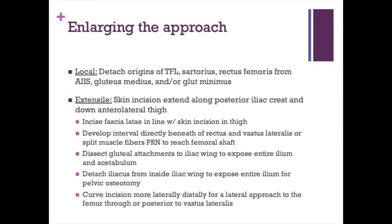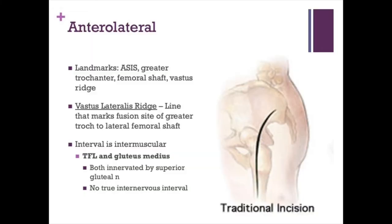Moving on to the anterolateral or Watson-Jones approach — patient positioning is either supine with the buttock on a bump, or fully lateral. The incision is similar to a posterior approach, going along the long axis of the femur and curving towards the PSIS. The vastus lateralis ridge is an important landmark. The interval is intermuscular between the TFL and the gluteus medius, but both are innervated by the superior gluteal nerve, so there is no true inner-nervous plane.